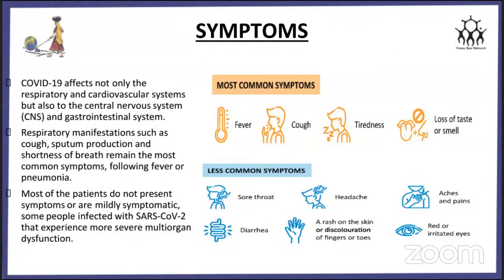COVID-19 symptoms. COVID-19 affects not only the respiratory and cardiovascular systems but also the central nervous system and GI tract; further presentations will relate COVID-19 to the GIT system. Most common symptoms are fever, cough, tiredness, and loss of taste and smell. Respiratory manifestations such as cough, sputum production, and shortness of breath remain the most common symptoms following fever or pneumonia.